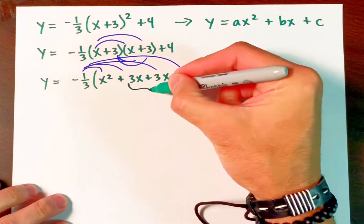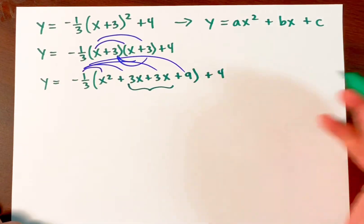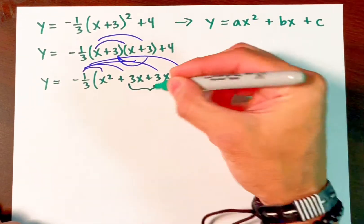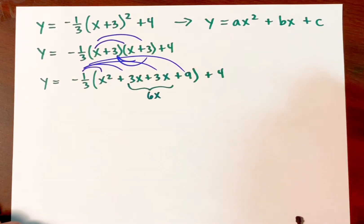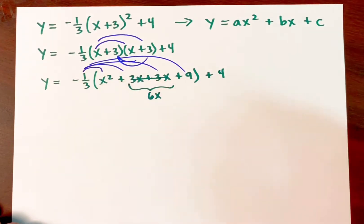If anything, you could actually combine these first. So with your permission, I'll call 3x plus 3x, I'll just call that 6x with your permission.